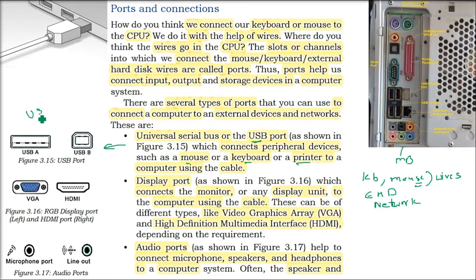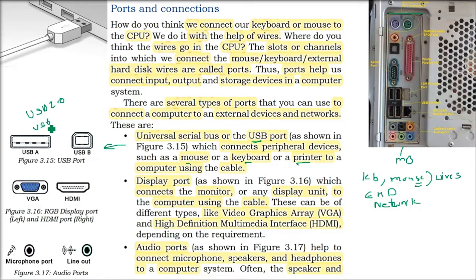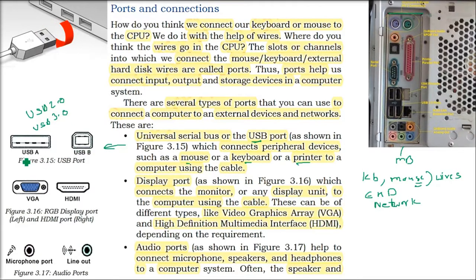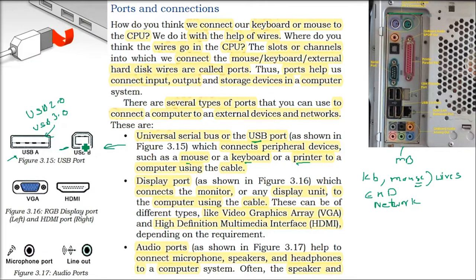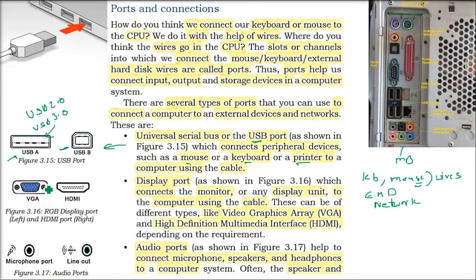There is USB 2.0 and USB 3.0 — the speed has enhanced and the technology has changed. The USB-B port is something different; it's not the standard USB-A. Sometimes printers use this USB-B port.